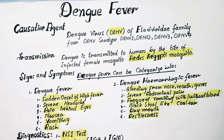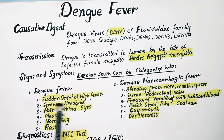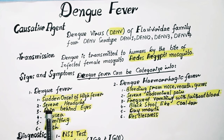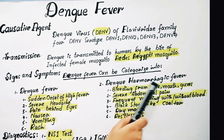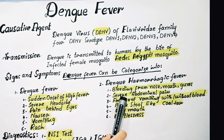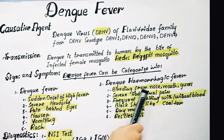Dengue fever is suspected when a high fever is accompanied by the following symptoms: sudden onset of high fever, severe headache, pain behind the eyes, nausea and vomiting, and skin rashes.